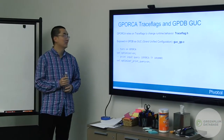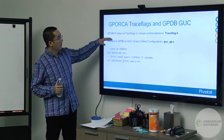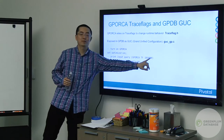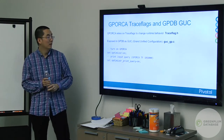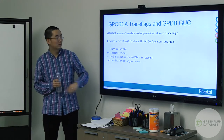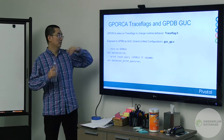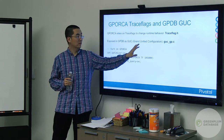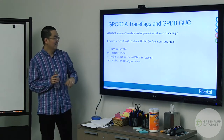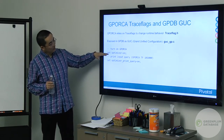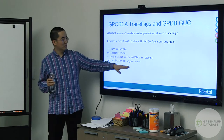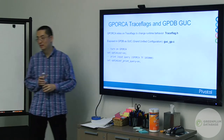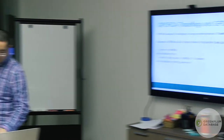If something fails, how do you figure out where to go? There are multiple tools for diagnostics. One is trisflag.h, where you can see a lot of flags like 10100, 101001 — all changing the behavior of GP-ORCA. Most of them map to GUC (Grand Unified Configuration) in GPDB. For example, you can set optimize_around and turn on viewing the input query as GP-ORCA sees it.